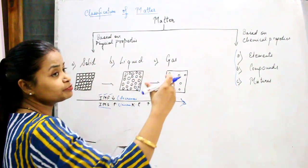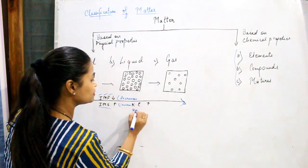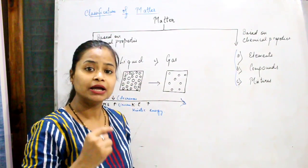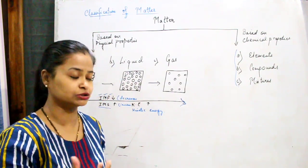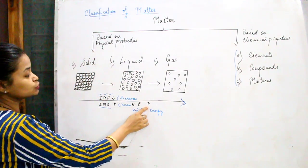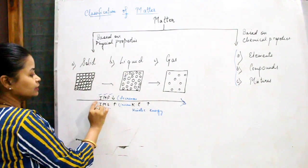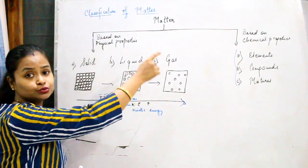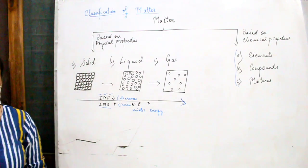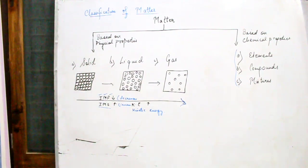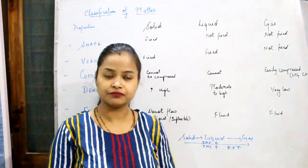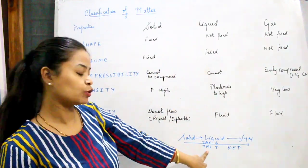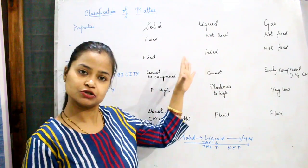As the intermolecular space increases, kinetic energy — the energy associated with moving particles — also increases. So, intermolecular force decreases, intermolecular space increases on moving from solids to gases, and KE also increases. Now let us study the differences between solids, liquids, and gases on the basis of these factors.